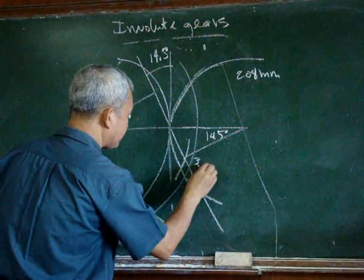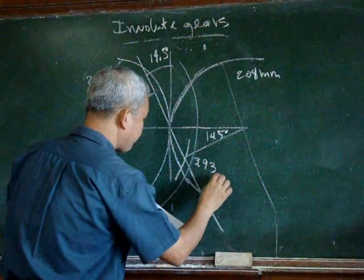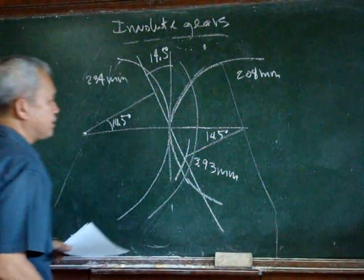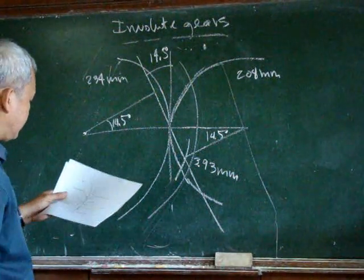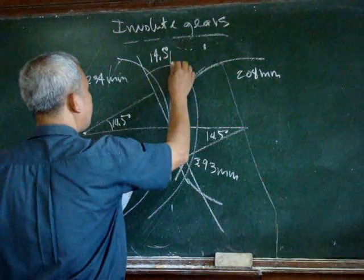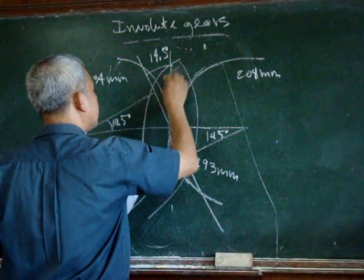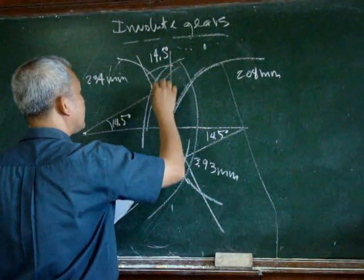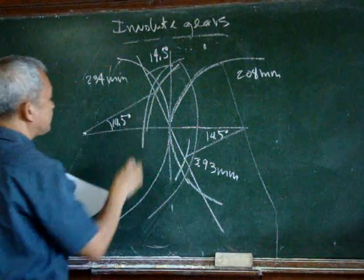is 3.93 mm in our bigger gear. And in our other gear, if we have the addendum here, and this is our point of interference,